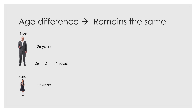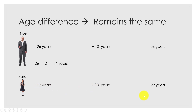Now let's fast forward 10 years. Tom's age will be 26 plus 10, which is 36 years old. Sarah's age will be 12 plus 10, which is 22 years old. The difference in their ages is 36 minus 22, which again gives us 14 years.